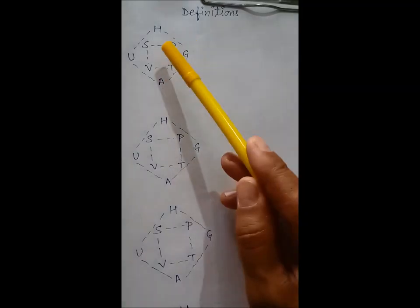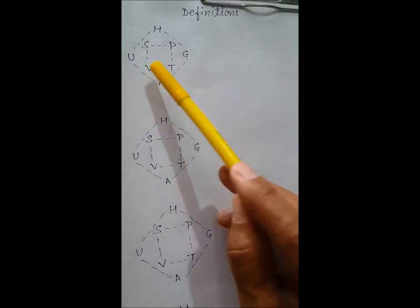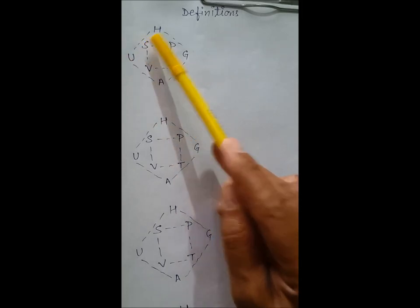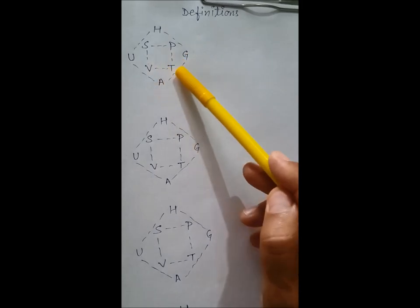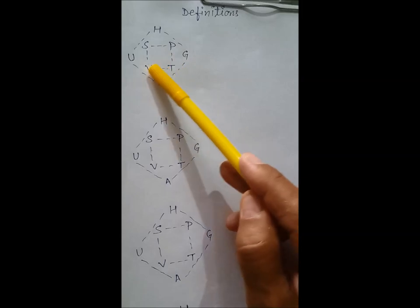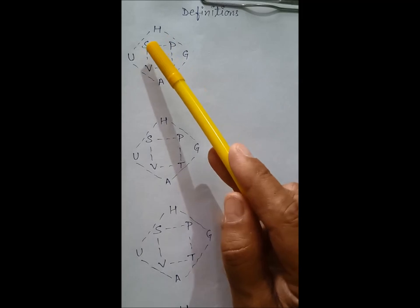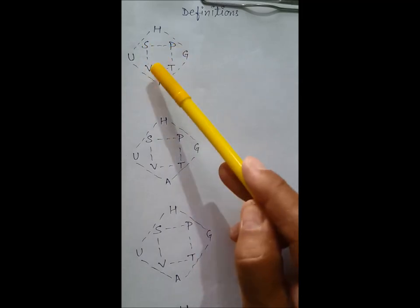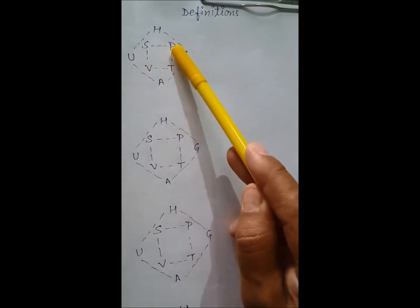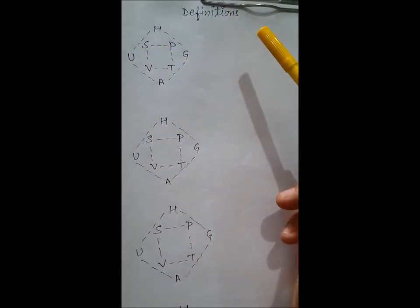First of all we have to draw a picture like this. In this square box we have S, P, V and T. S is entropy, P is pressure, T is temperature, V is volume. To remember this square box, you can say: smart people very talented.